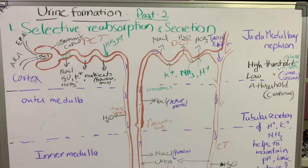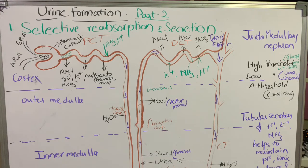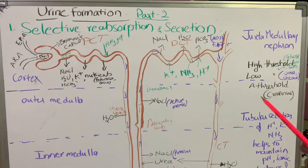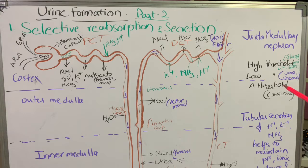Based on the necessity of absorption, the substances of glomerular filtrate can be grouped into three types: high threshold substances, low threshold substances, and no-threshold substances. High threshold substances like glucose, amino acids, vitamins, and some salts are efficiently reabsorbed into the blood. Low threshold substances like urea and uric acid are reabsorbed in very minute quantities. No-threshold substances, such as creatinine, are the actual excretory products and are completely eliminated.